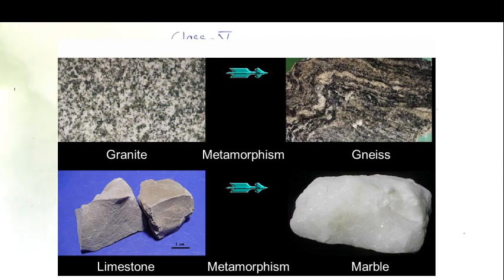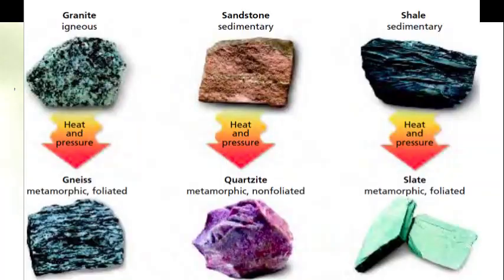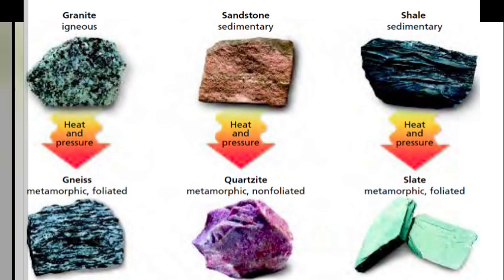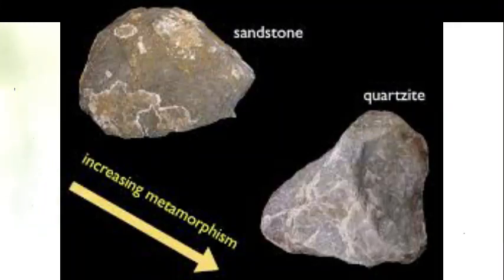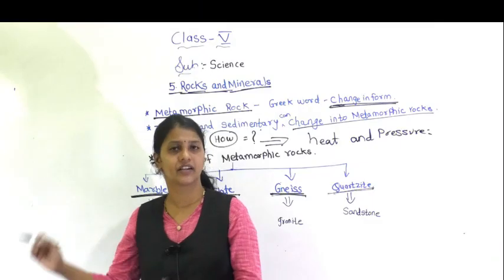The last type of metamorphic rock is quartzite. This rock is formed from sandstone, which is a sedimentary rock. When sandstone undergoes several changes, the rock formed is quartzite. This rock is used for making glass and in ceramic industries.